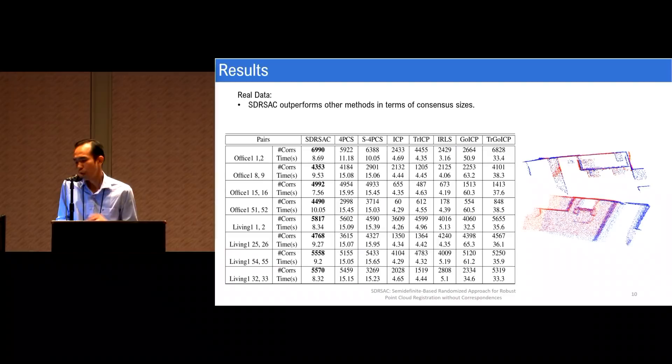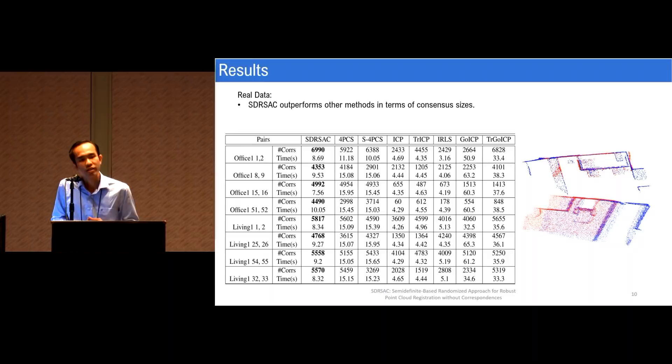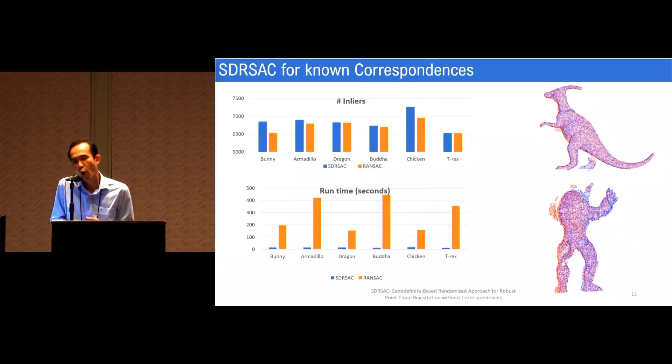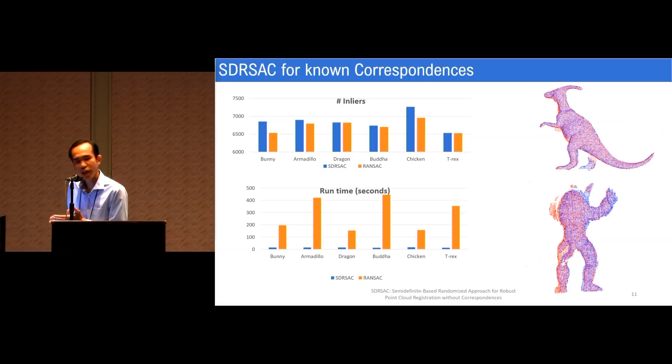We then use the obtained correspondences together with ICP to align the point cloud and record number of inliers. So this process is repeated until a stopping criterion is achieved. Here we show the result of our technique. In this experiment, we conduct registration on our synthetic data set where we varied the outlier rate from 10 to 50 percent on around 10,000 points. As can be seen, our method achieves a higher number of inliers with comparable or even faster runtime than state-of-the-art approaches for this particular problem.